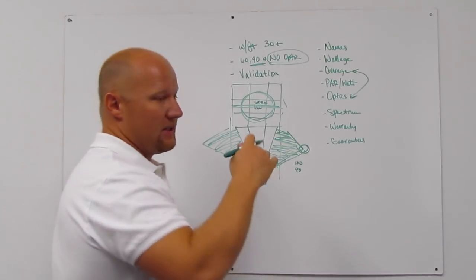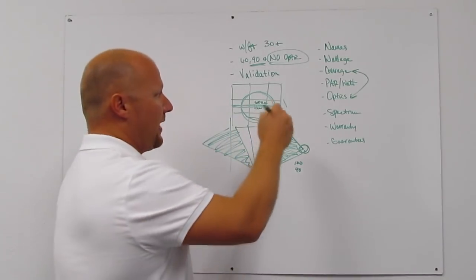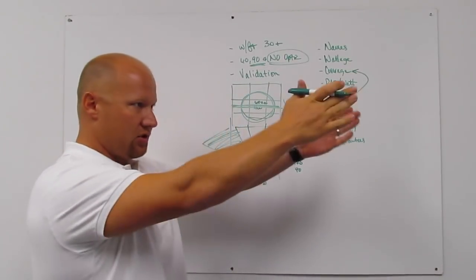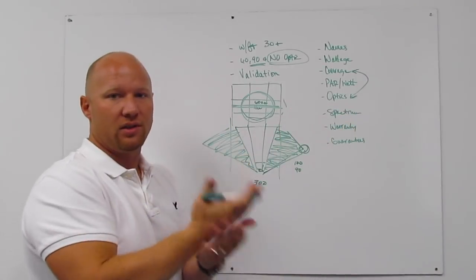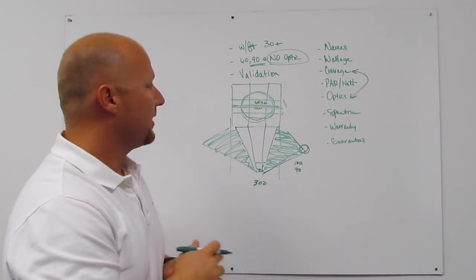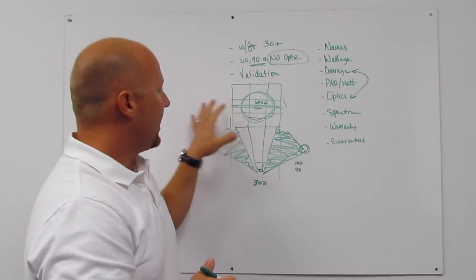The other thing is you miss out on penetration. So if your plant canopy is three foot tall, because you're sending light in all directions, you're not sending it straight down into that plant canopy, you're losing your penetration as well. So that's coverage that kind of talks about optics as well, and that should help you to pick the right light.